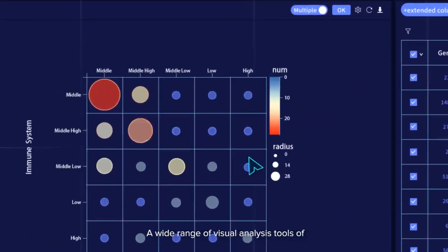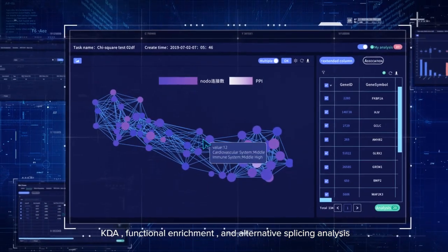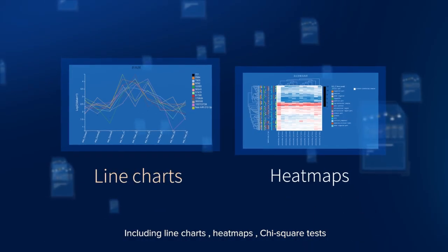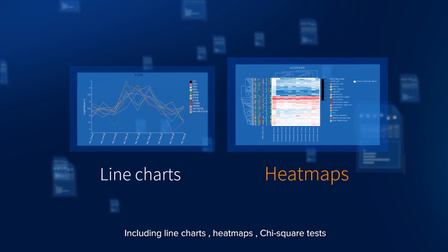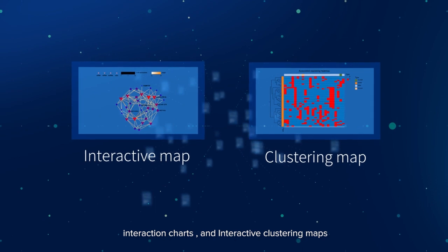And a wide range of visual analysis tools for KDA, functional enrichment and alternative splicing analysis, including line charts, heat maps, chi-square tests, interaction charts and interactive clustering maps.